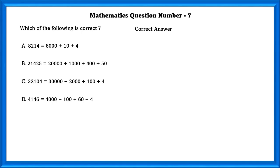Mathematics Question Number 7: Which of the following answer is correct? A option is the wrong answer because the correct answer is 8,014. B option is also not right. It is 21,450. C option is correct. It is 3,104. So the answer is C.